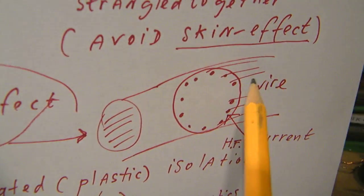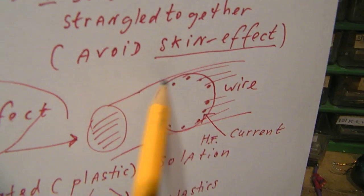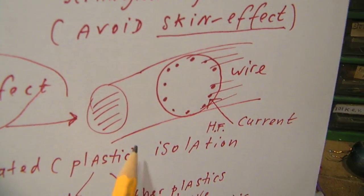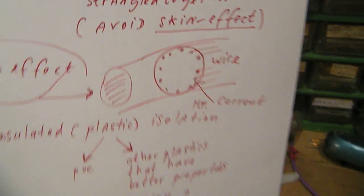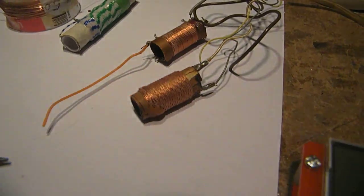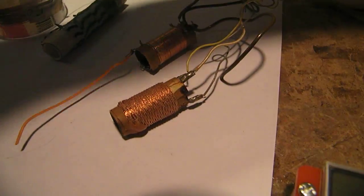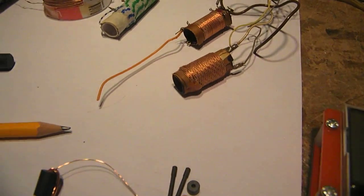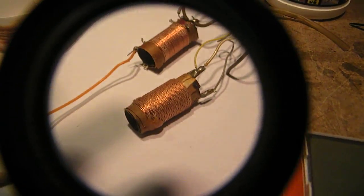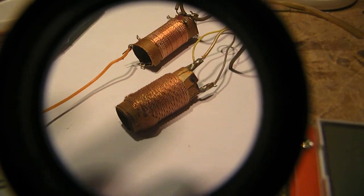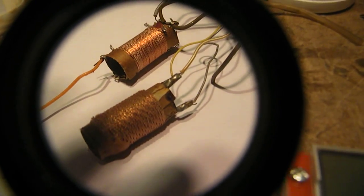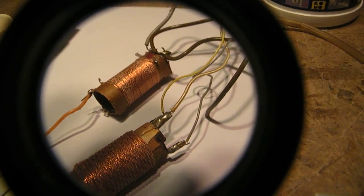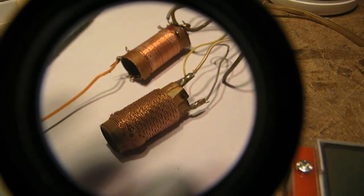The high frequency current flows on the outer side of the wire. And that's why you see here for instance a coil that's specially made to avoid that problem. It's called in the Netherlands litze wire.